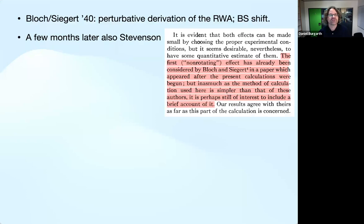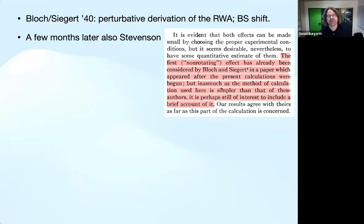Rabi did not coin the term 'rotating wave approximation' — he just made the approximation. A better name at that point would have been the 'rotating field approximation', since you're replacing a linear field with a rotating field. Shortly after Rabi, Bloch and Siegert gave a complete analysis and a perturbative derivation of the RWA, including corrections such as the Bloch-Siegert shift. Interestingly, Stevenson came up with the same solution a few months later in an arguably more elegant paper, but says himself that he got scooped by Bloch and Siegert.